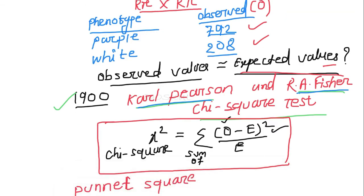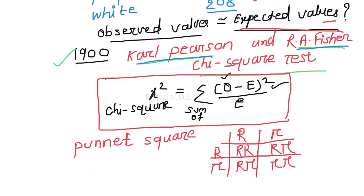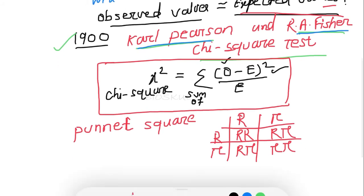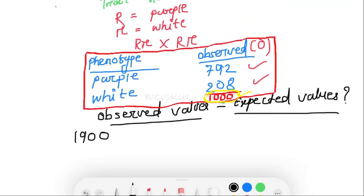We have crossed capital R small r with capital R small r. From the Punnett square, we get RR, Rr, Rr, and rr. So here the dominant character is 3/4 and the recessive trait is 1/4. The total number of flowers is 1,000 — add both observed flower counts and the total is 1,000.